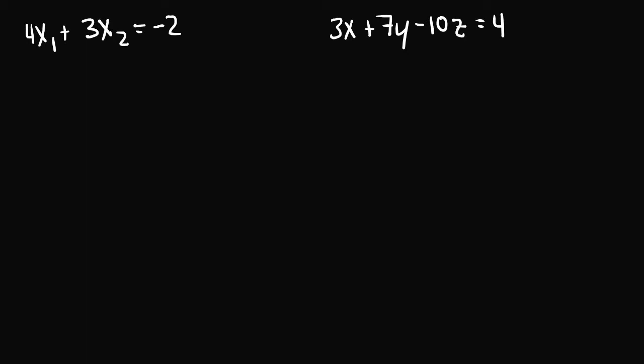So these are both linear equations. But what makes them linear? There's two important things in both of these equations that do make them linear. The first one is that none of the variables are raised to a power other than 1. In the first equation, our variables are x₁ and x₂. And in our second equation, we have x, y, and z.